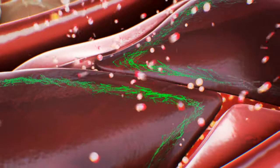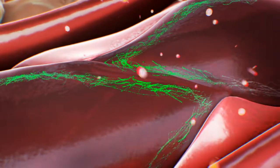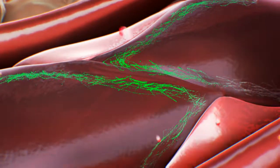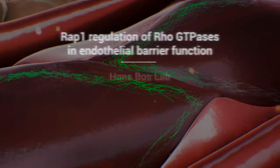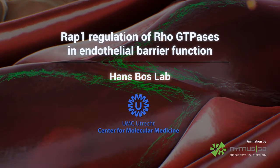The switch from radial to cortical actin results in a stronger endothelial barrier.